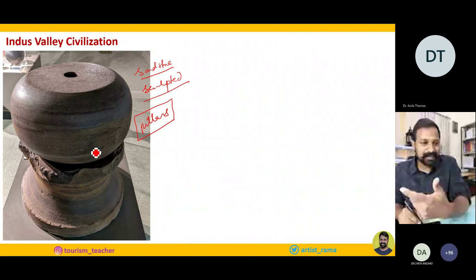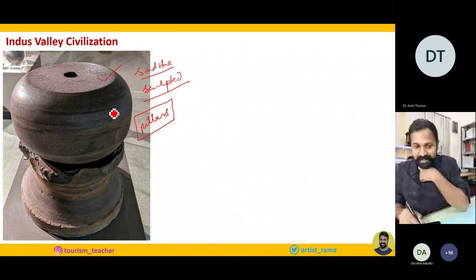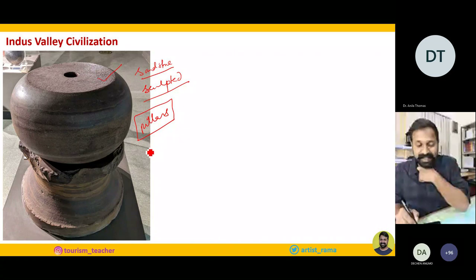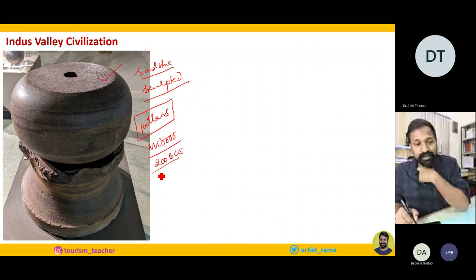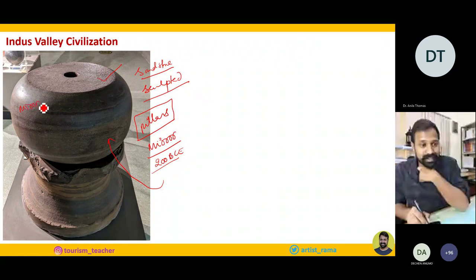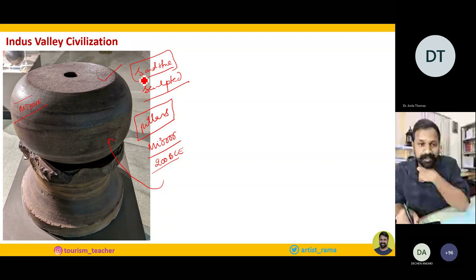Indus Valley people also used stone predominantly — especially sandstone from the region. They sculpted the sandstone and made the pillars of their houses with it. Why am I bringing this discussion of stone to the forefront again and again? Because the further concepts we talk about are all related to stone. For example, the Ashokan pillars are very famous for their mirror finish. And Ashoka was around 250 to 180 BCE. Imagine, some 4500 years before Ashoka, Indus Valley people were already carving stones — and you can see the same mirror finish on those stones too.